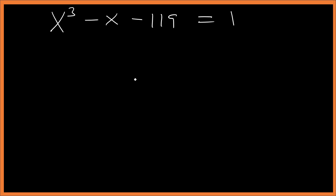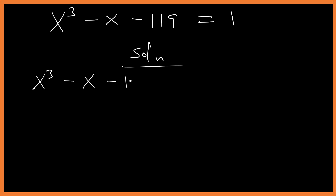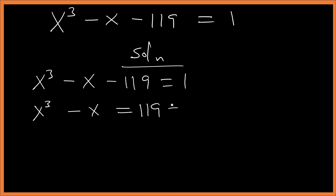Let's solve this question together. We are given x³ - x - 119 = 1. So x³ - x = 119 + 1, which gives us x³ - x = 120.